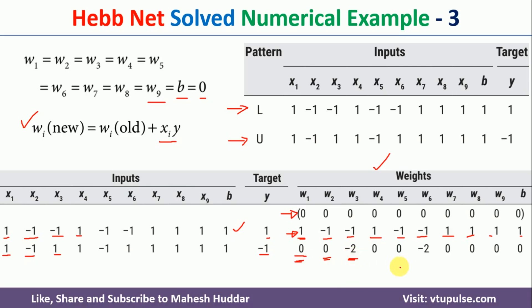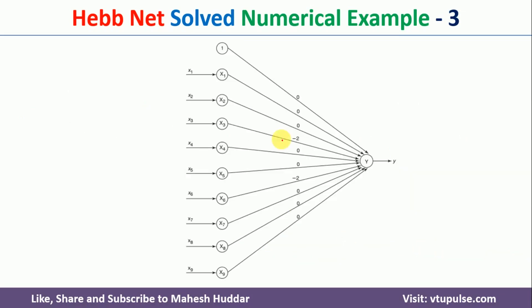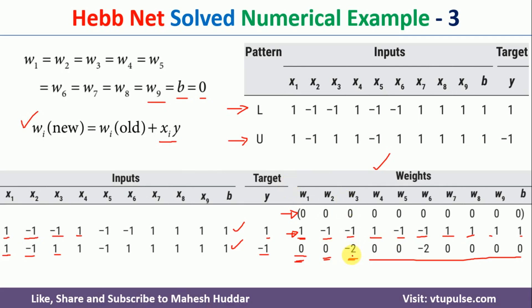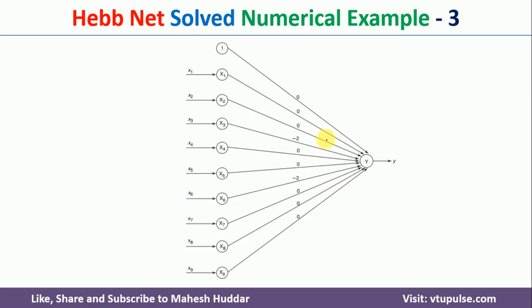After processing both training inputs, the final weights are: w1, w2, w4, w5, w7, w8, w9 = 0; w3 = -2; w6 = -2; bias b = 0. In the final Hebb network, x1 through x9 are the inputs, with weight -2 on x3 and weight -2 on x6; all other connection weights are 0.